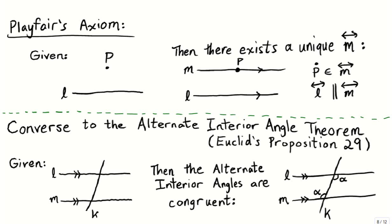This is a proof from Euclid's Elements, Book 1, Proposition 29, the converse to the Alternate Interior Angle Theorem. What this result says is that if we are given two lines, L and M, and these two lines are parallel, then for any transversal K which cuts through them, the alternate interior angles are congruent.